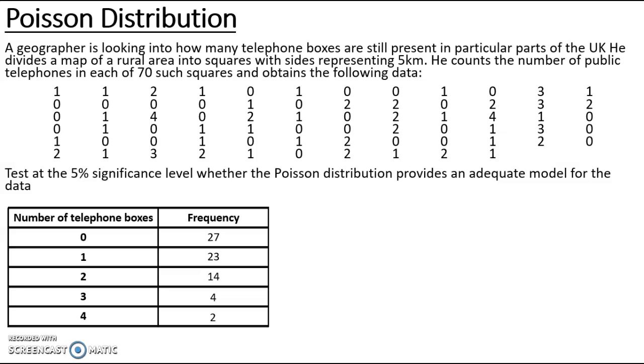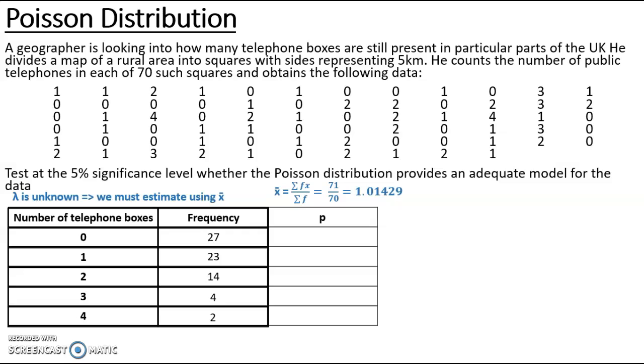Now I've got that information on my frequency table I can look at working out those expected values. To work out an expected value I need to use the Poisson distribution, work out the probability of each x value, and then work out how many we would expect using that probability. The difference between these examples and ones we've done previously is I can't straight away work out a Poisson distribution because I don't have a value for lambda. Because that is unknown I'm going to have to estimate it using x-bar, my sample mean. If I take the sum of fx divided by the sum of f, 71 divided by 70, I get an x-bar of 1.01429 and I'm going to use that as my estimate for lambda.